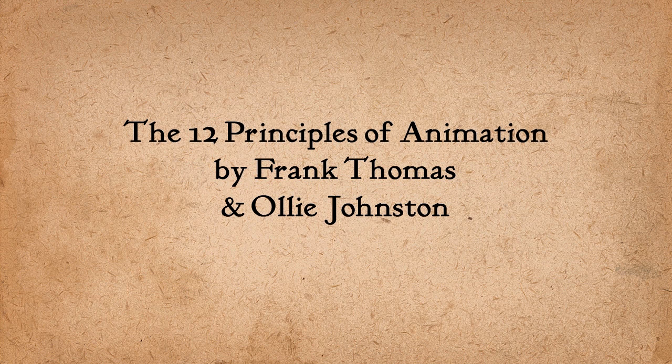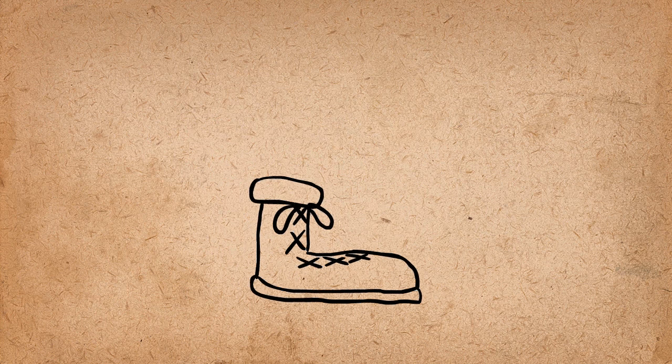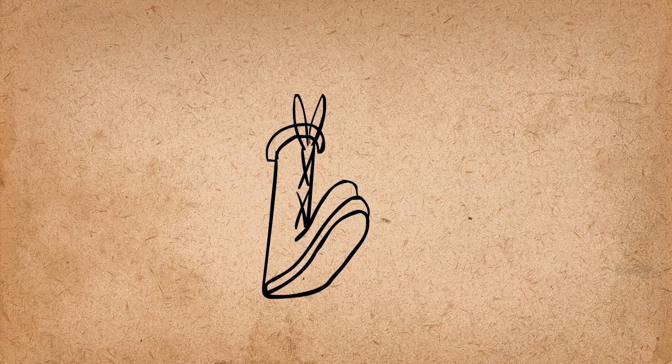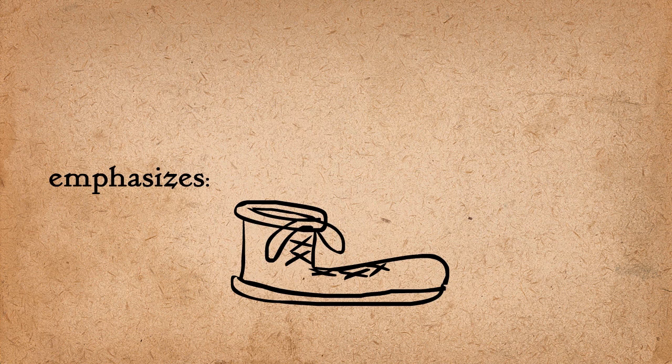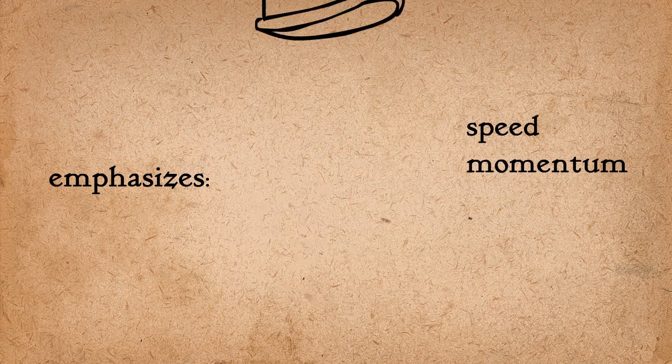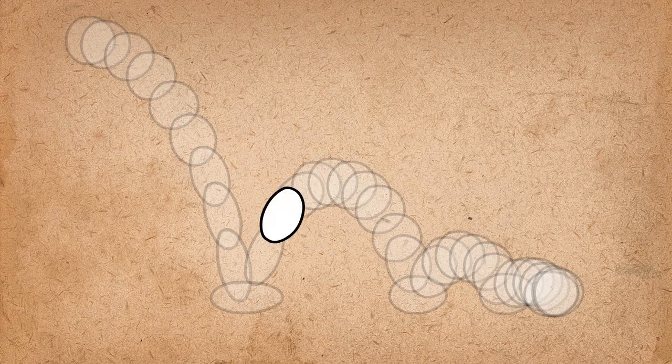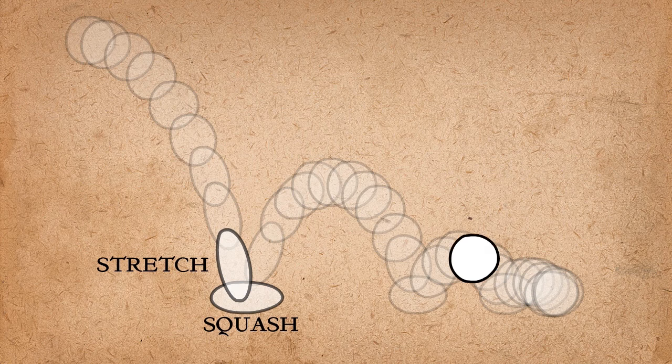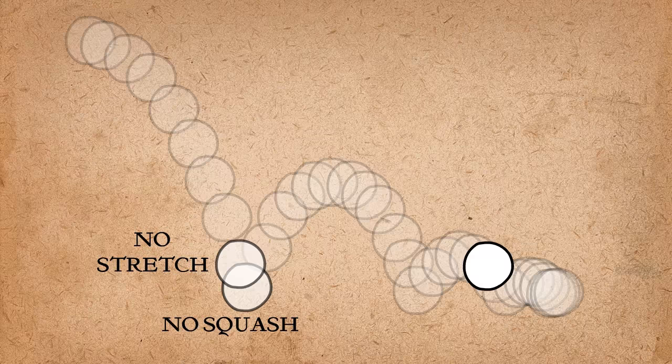The first principle is squash and stretch. This is the principle that animated objects will get longer or flatter to emphasize their speed, momentum, weight, and mass. Here's a bouncing ball that has squash and stretch, and here is one without squash and stretch. See the difference?